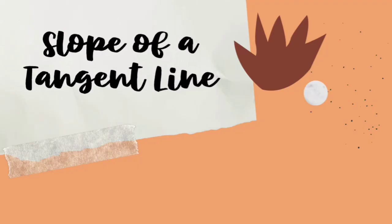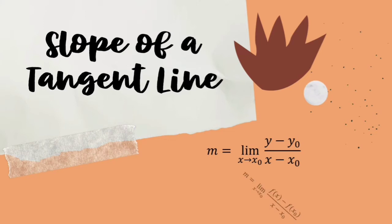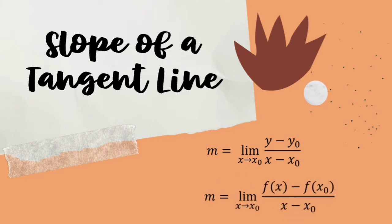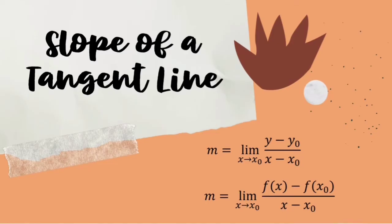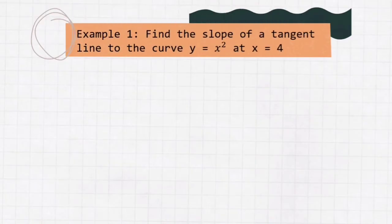Now, to find the slope of a tangent line, we have two formulas: m = limit of (y − y₀) / (x − x₀) as x approaches x₀, or m = limit of (f(x) − f(x₀)) / (x − x₀) as x approaches x₀. Both formulas are just the same. I prepared examples for you to know how to solve for the slope of a tangent line better.